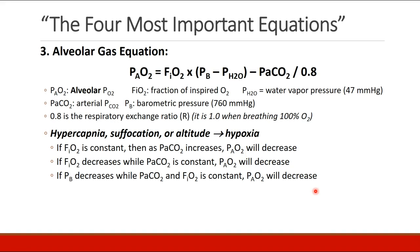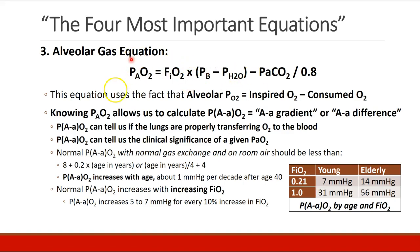Now let's analyze this equation in a little more detail. The alveolar PO2 — which is difficult to measure directly — can be calculated by looking at the inspired oxygen minus the consumed oxygen. We care about alveolar PO2 because it lets us calculate the A-a gradient, or A-a difference. It's the difference between the PAO2 — the alveolar partial pressure of oxygen — and the PaO2 — the arterial partial pressure of oxygen. This tells us if the lungs are properly transferring oxygen to the blood, and the clinical significance of a given PaO2.